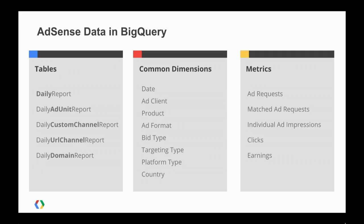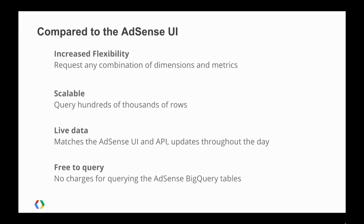You'll notice that CPC, CTR, and RPM are missing from that list. That's because those are all derived from the base metrics, which is something you can do easily as part of your query. Compared to the UI, this gives you quite a bit of extra flexibility in that you can request any combination of dimensions and metrics available in those tables, and you can run much larger reports than in the UI. The data is still retrieved live, so updates throughout the day will be reflected in BigQuery and will match what you see in the UI at all times. It's still free to query this data.